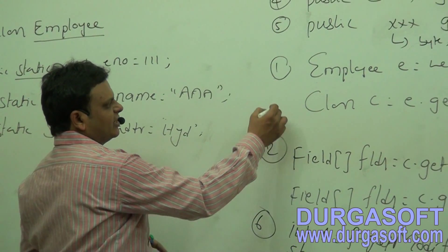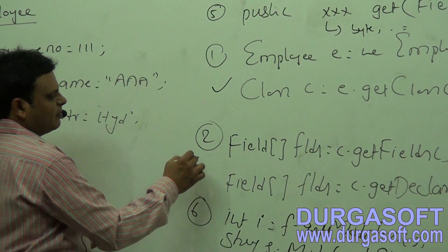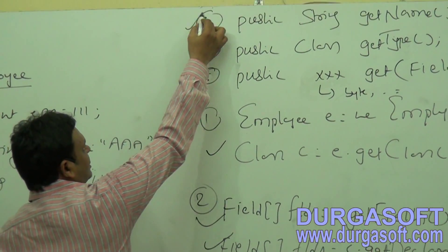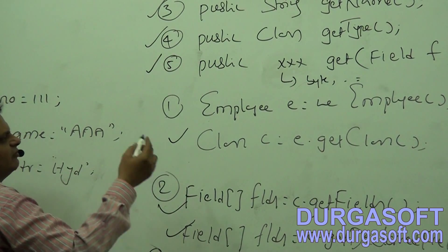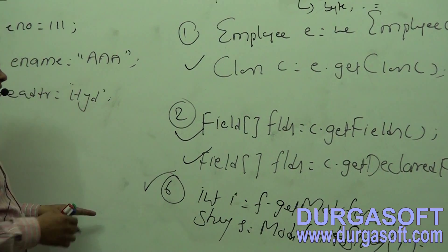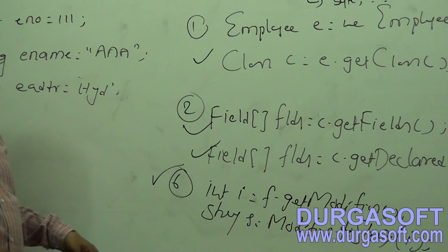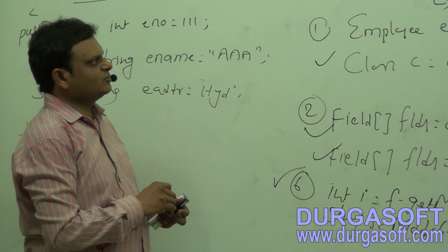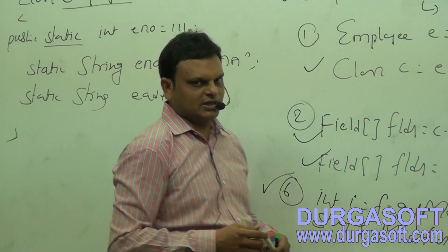So first we need to get the class object. After getting the class object, we need to get all the field variable metadata in the form of a fields array. For that purpose we use either getFields() or getDeclaredFields(). To get name use getName(), to get type use getType(), to get value use get(), and to get access modifiers use getModifiers() then pass to Modifier.toString(). These are the various methods available inside the Field class to get information about a particular field.